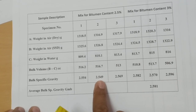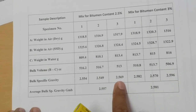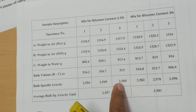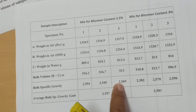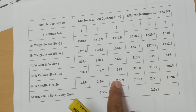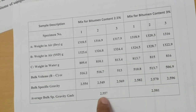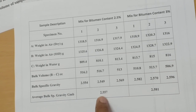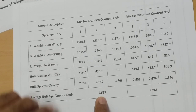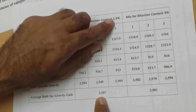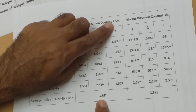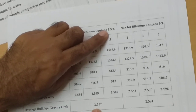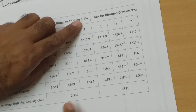Similarly, I have calculated Gmb for the second and third specimens. When all three values are in my table, I find the average value. This is the average Gmb when the bitumen content is 2.5%.